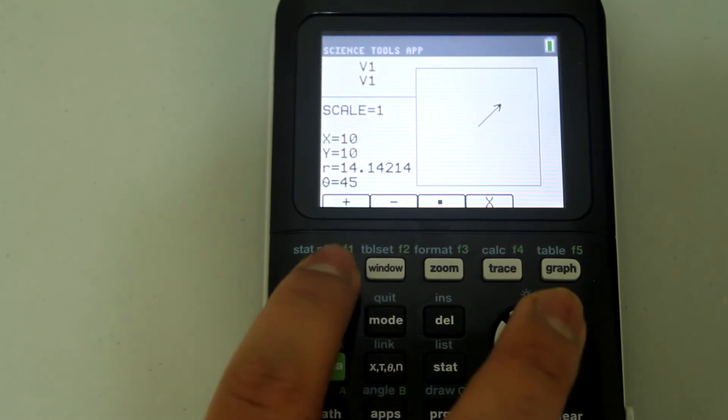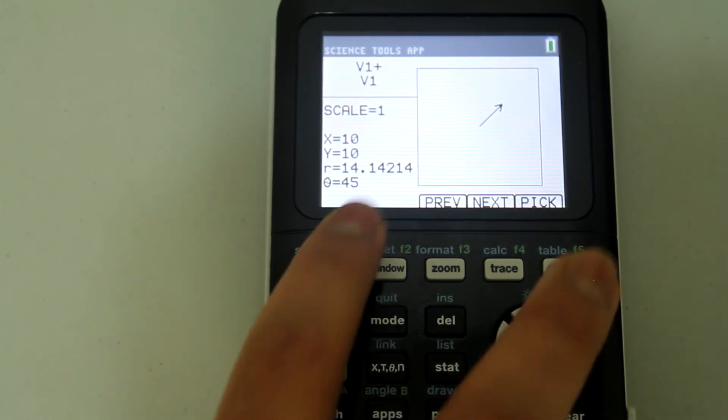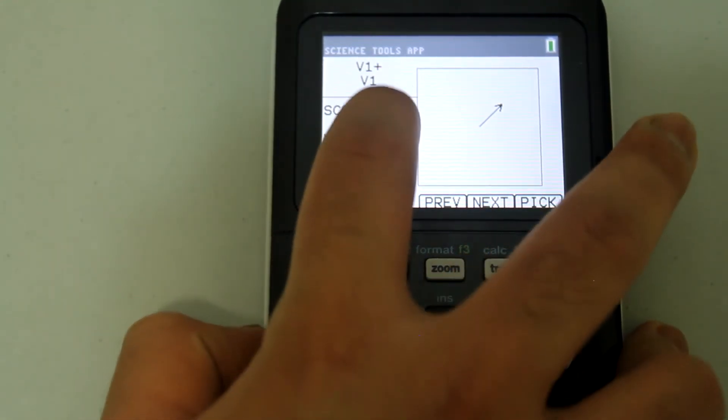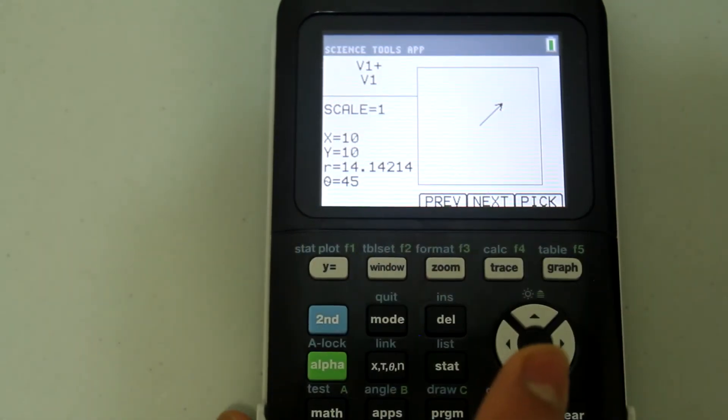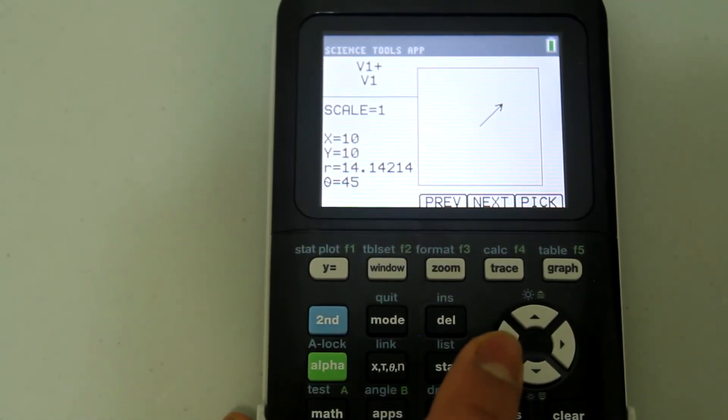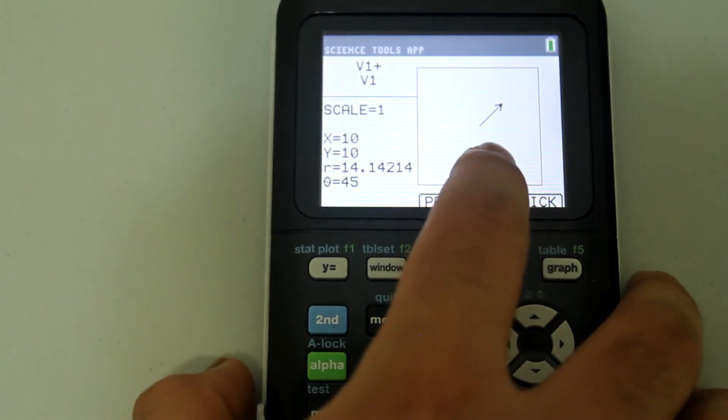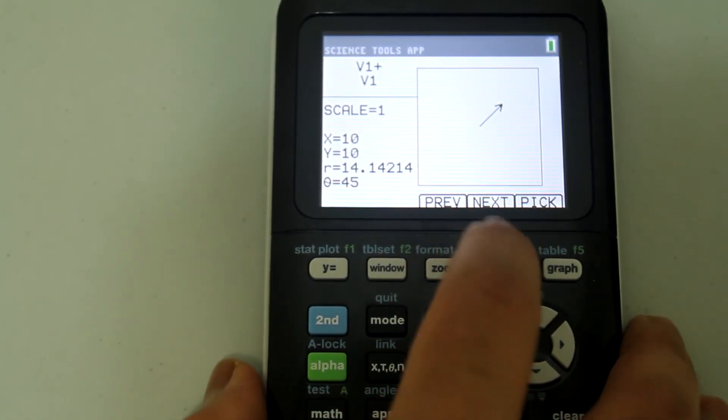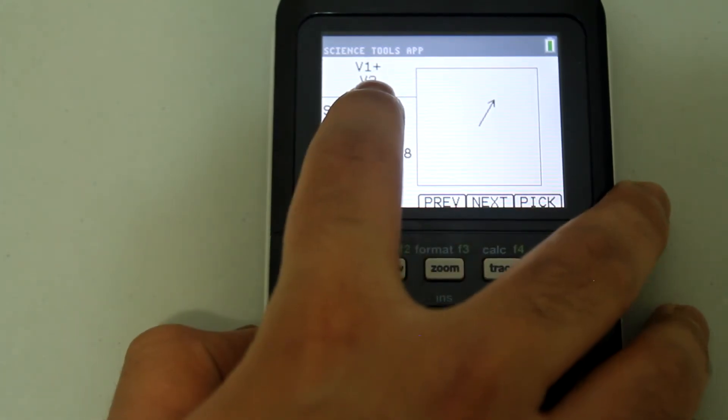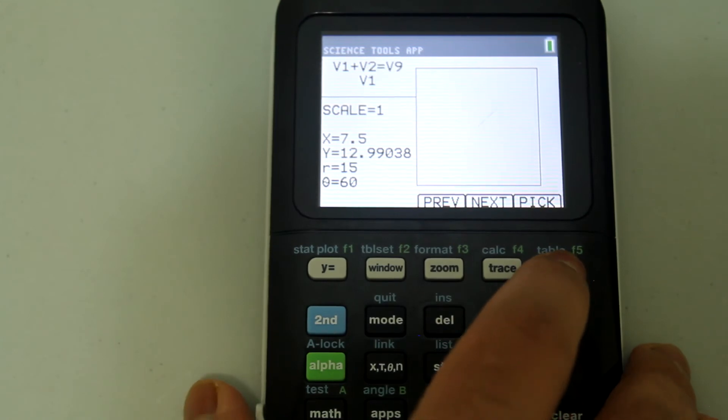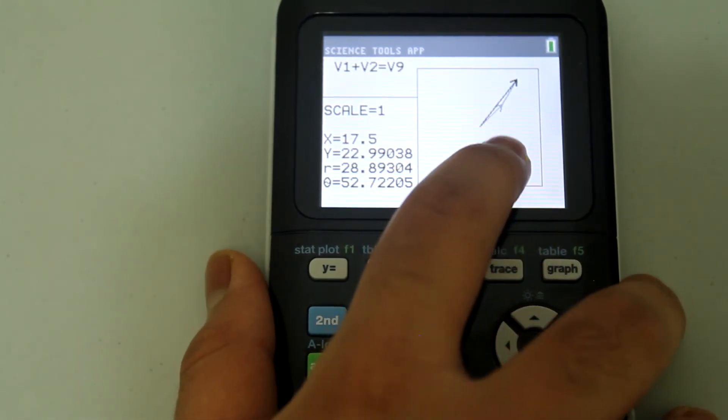We are going to add to V1. Notice that it's automatically V1 plus V1 but we don't want to add V1 plus V1. We want to add V1 plus V2. So hit the button under next which is trace. Now you see that it says V1 plus V2.